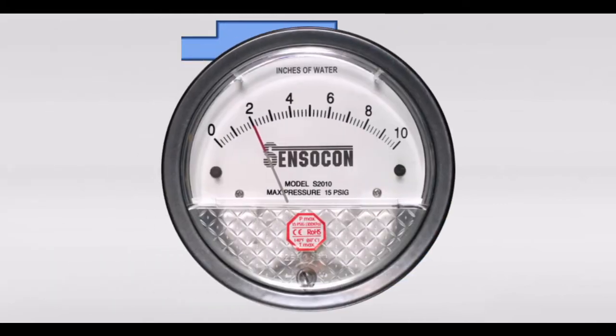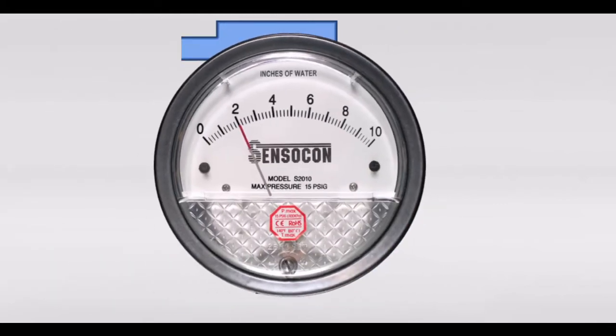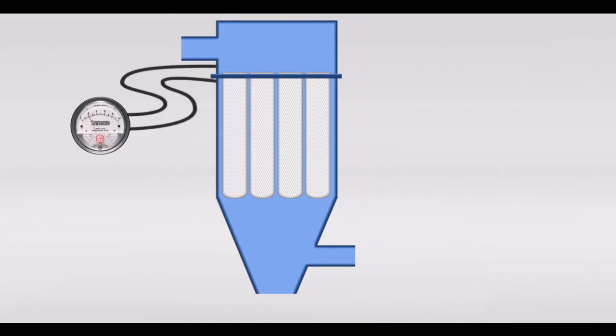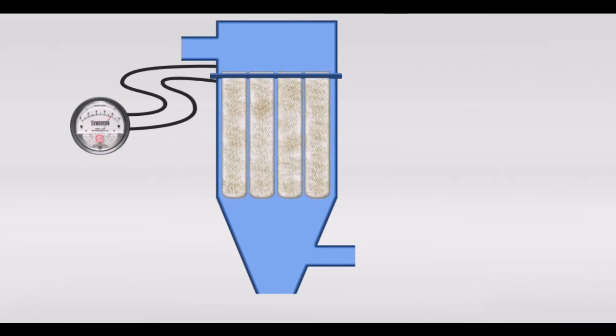With the use of a series S2000 differential pressure gauge, you can accurately see the increase in differential pressure across the dust collector's filters as it loads with debris and dust. This allows the user to know when it might be time to change or clean the air filters.